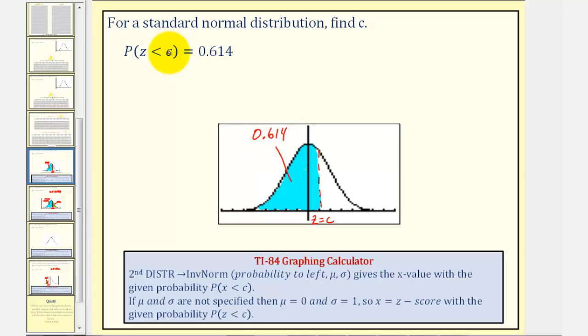So now to find the value of C, or the Z-score that satisfies this probability, we can use the inverse norm feature on the TI-84 graphing calculator.